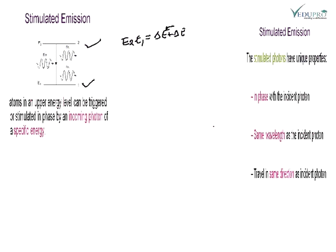तो इनकी probability किस पे depend करेगी — probability दो से लेके एक में आने के, यानि P21 — P21 क्या हो रहा है, stimulated हो रहा है। किस पे होगा तो B21 into energy density पे depend करेगी। कितनी हो रही है वो, यानि P21 क्या है — Einstein coefficient energy है।